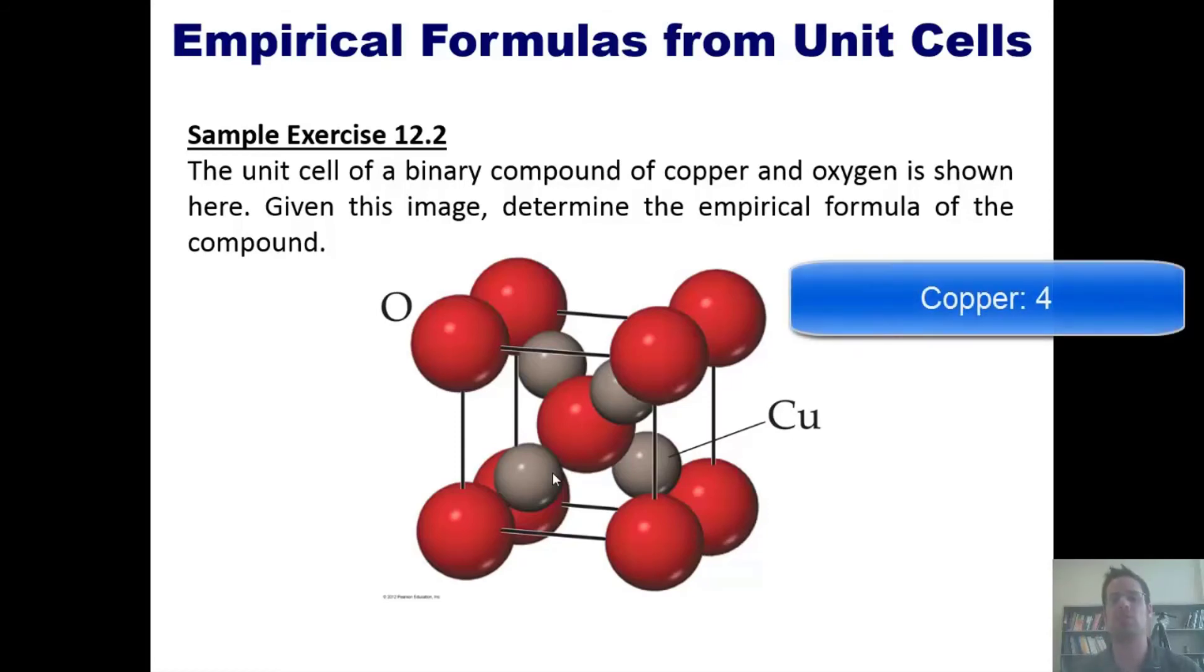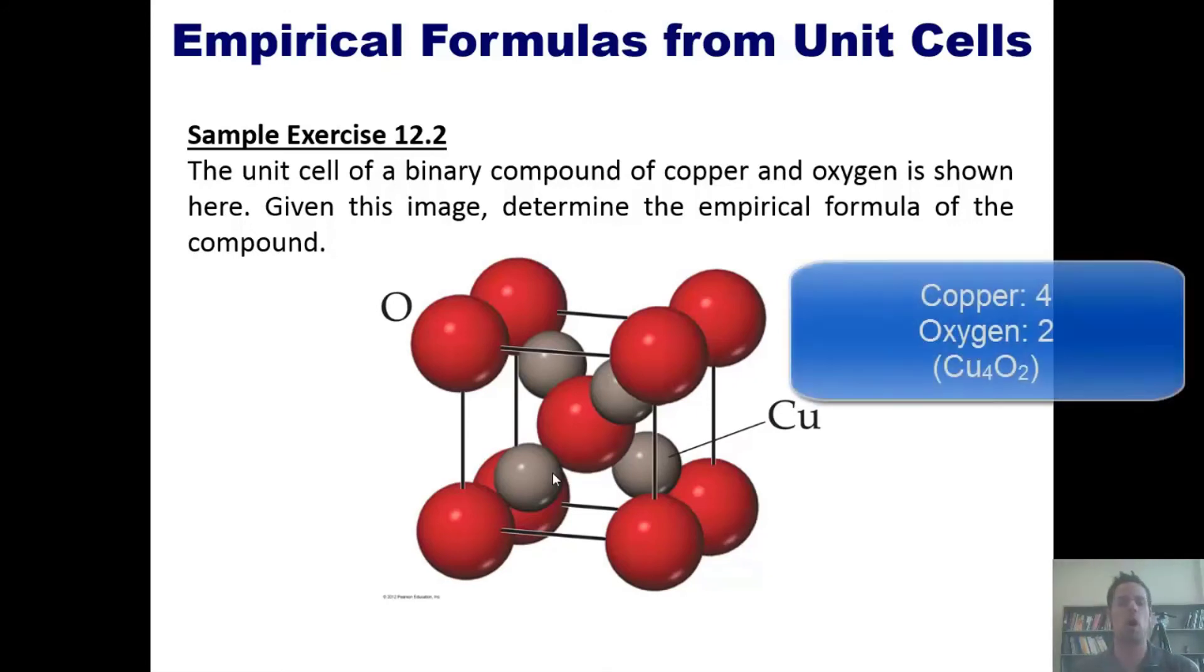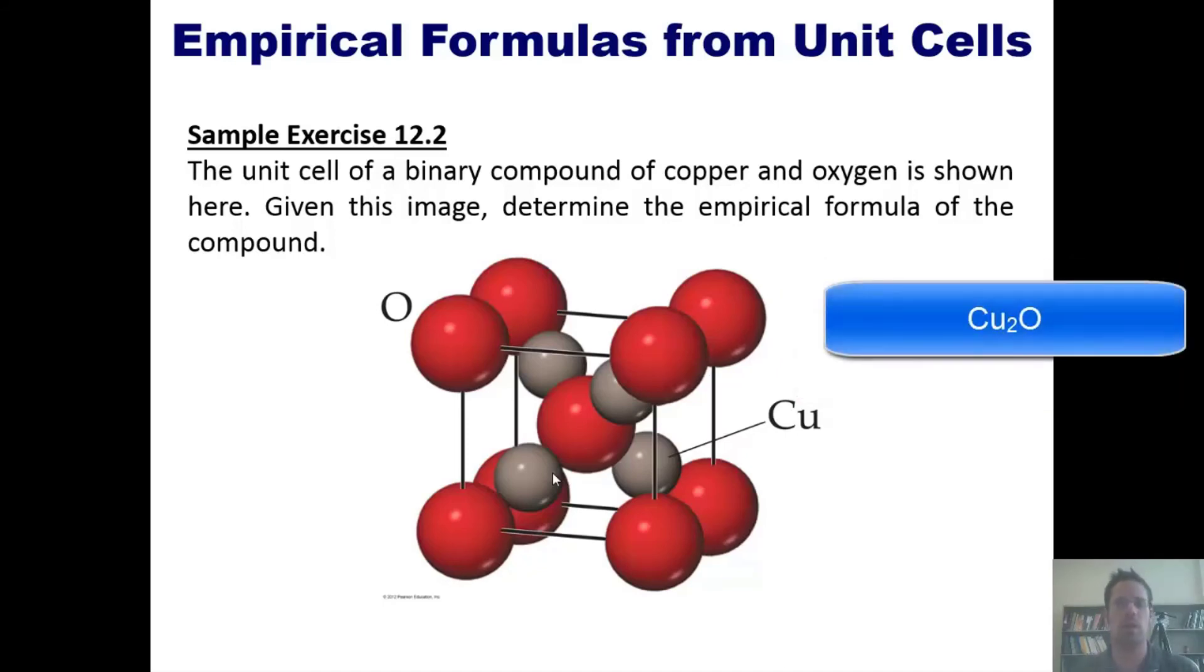I also have four individual coppers that are completely within the unit cell. So I've got a total empirical formula of copper 4O2. As we simplify that mathematically, it ends up coming to Cu2O. That is the correct empirical formula for this unit cell.